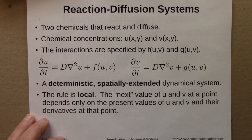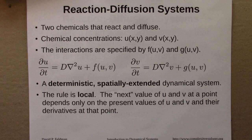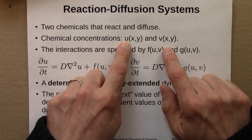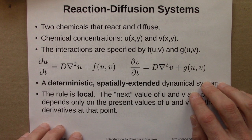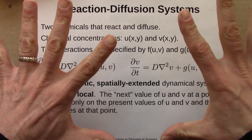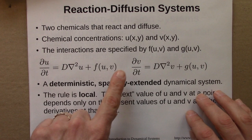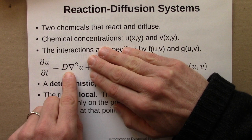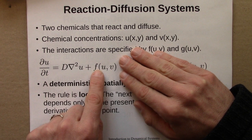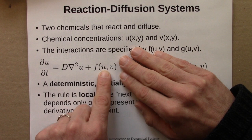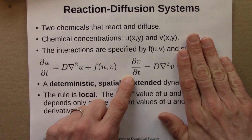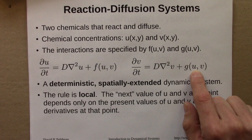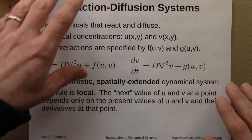Things get more interesting in reaction diffusion systems. Here we have two different types of chemicals, often called U and V or A and B. U is the concentration of one chemical as a function of X and Y, and same for V. Both of these chemicals diffuse — they spread out across the surface — but they also interact with each other. Their equations of motion are: diffusion for U plus some interaction term F that depends on U and V; and for V, diffusion plus a different interaction function G, also a function of U and V.